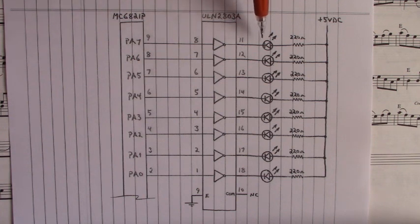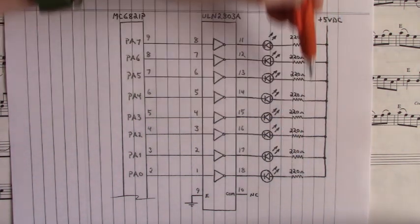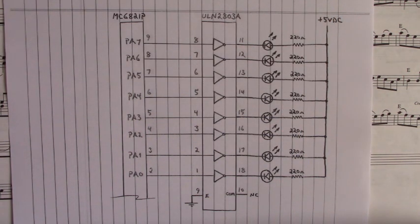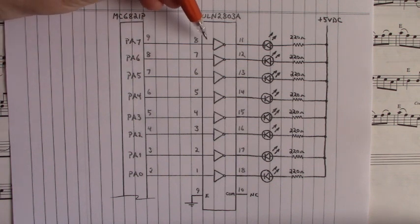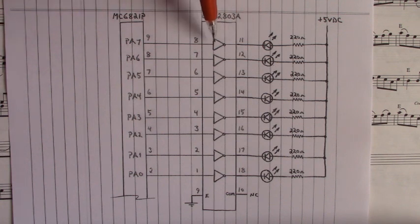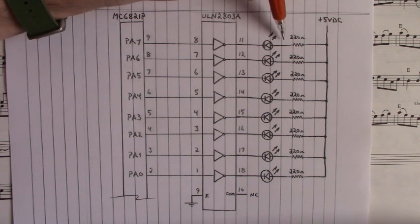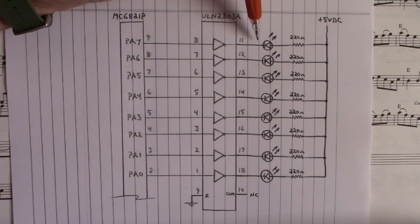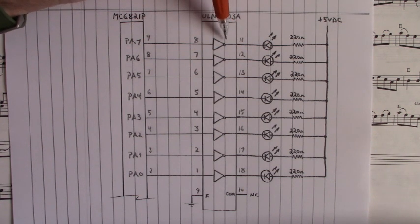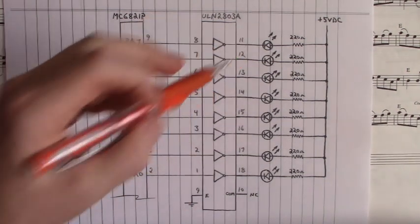The cathodes of the LEDs are tied to the collectors of those Darlington transistors. And on the other side, we have a 220 ohm current limiting resistor on each LED circuit tied up to 5 volts DC. So when we have 5 volts into the base of that circuit, the Darlington transistor goes into saturation to E and current flows through the 220 ohm current limiting resistor, through the anode cathode junction of the LED through the collector emitter junction turning on that LED.